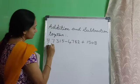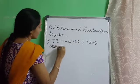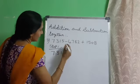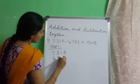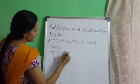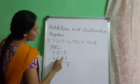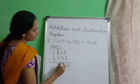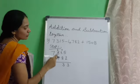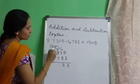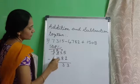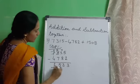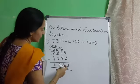Step 1: subtract the first two numbers, 7315 minus 4782. 5 minus 2 is 3. 8 tens cannot be subtracted from 1 ten, so we borrow 1 from the hundreds place. 11 minus 8 is 3. 2 is smaller than 7, so we borrow from the thousands place. 7 minus 1 is 6, and 2 becomes 12. 12 minus 7 is 5. 6 minus 4 is 2. By subtracting, we get 2533.